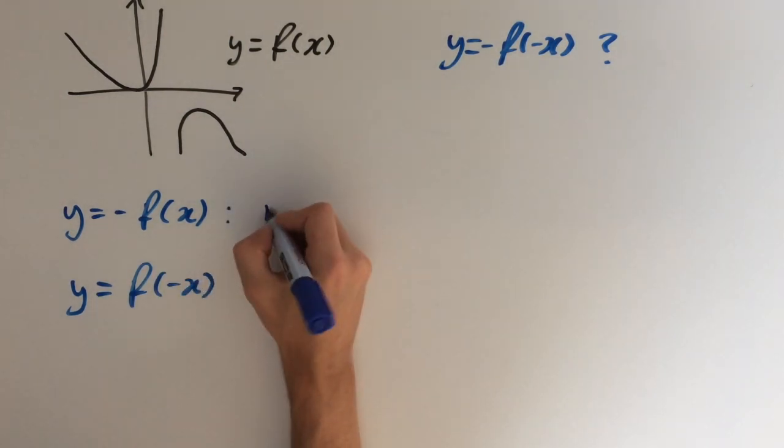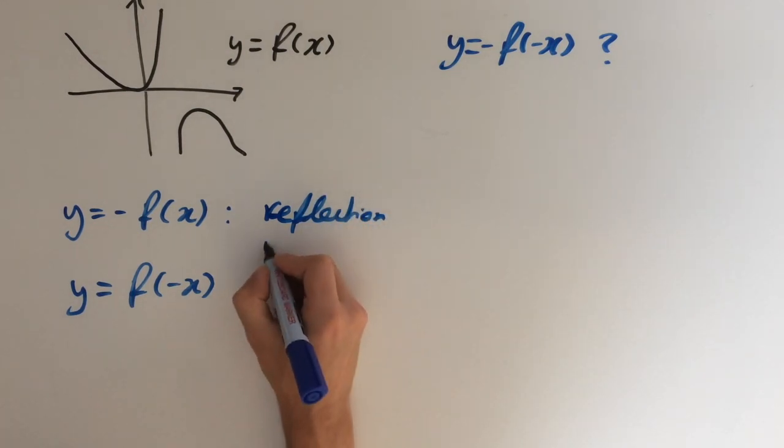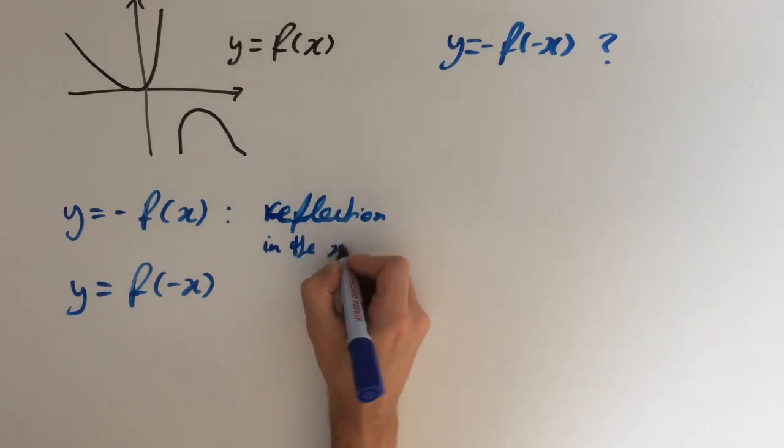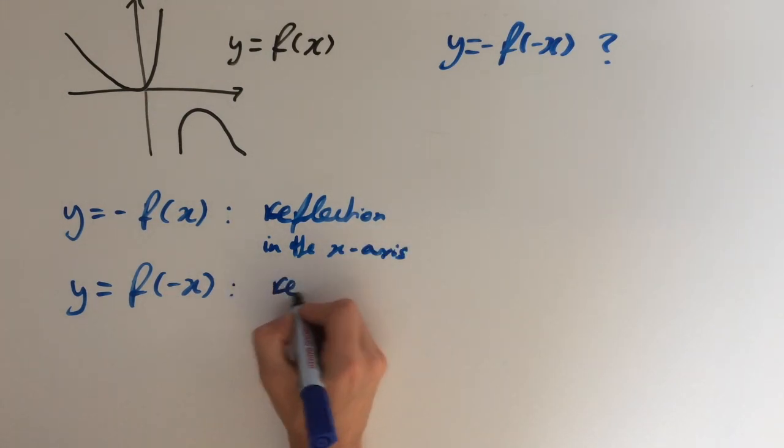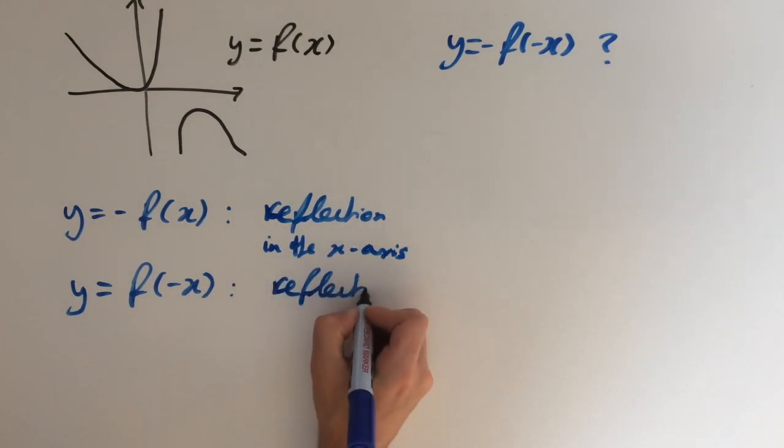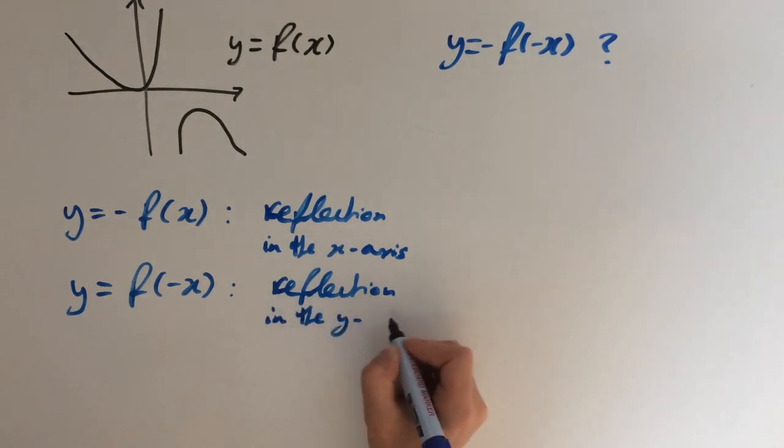The first one corresponds to a reflection about the x-axis. And the second one corresponds to a reflection about the y-axis. If you forget which way around each reflection goes, it may be helpful to do a simpler example first.